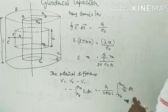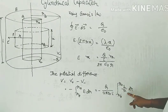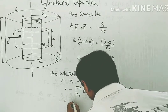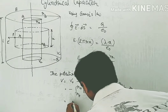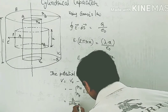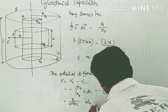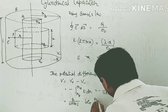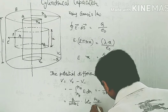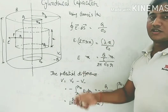Having the integration, we get the logarithm. So V equals Q upon 2 pi epsilon naught into l, into log of R_B upon R_A. This is the potential difference.